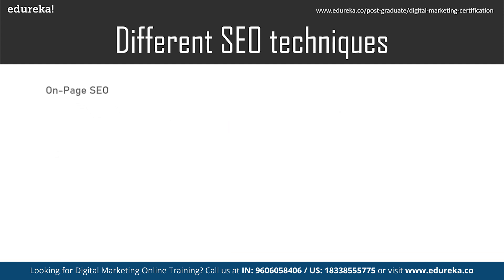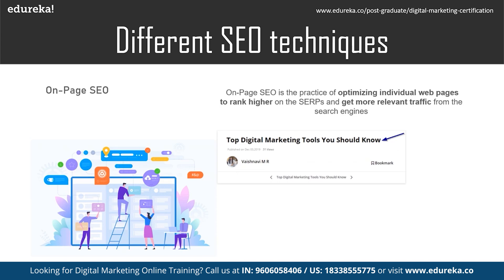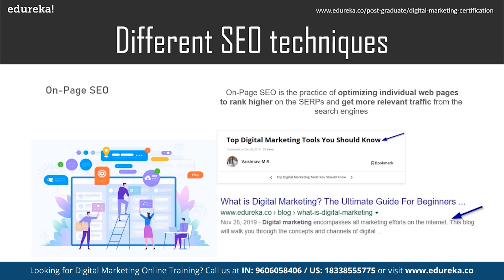On-page SEO is the practice of optimizing individual web pages to rank higher on the SERPs and get more relevant traffic from the search engines. As the name suggests, it optimizes the content that is present on the page. The content present on the page includes title tags, meta tags, meta description, keyword density, URL of the page, and so on.